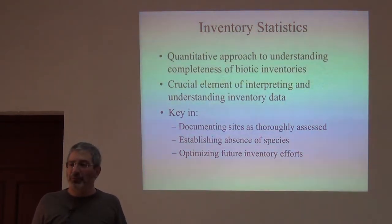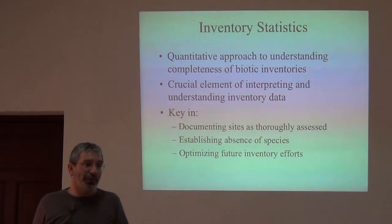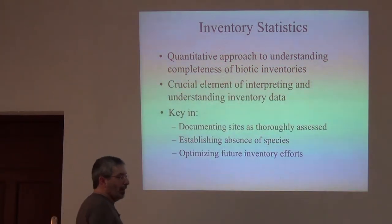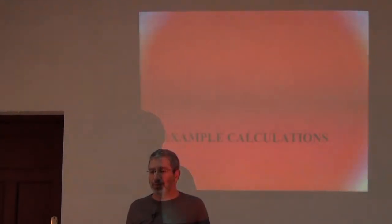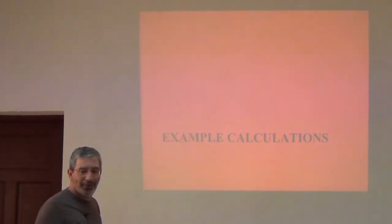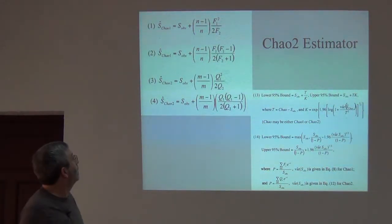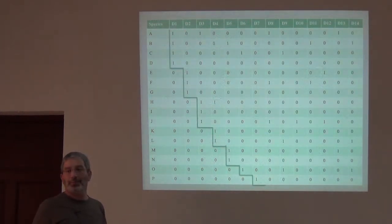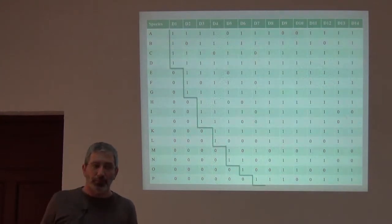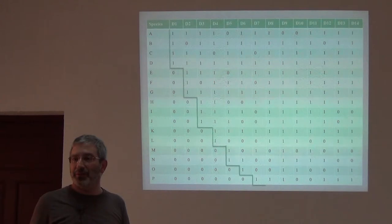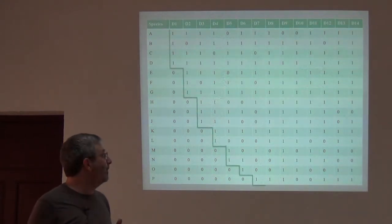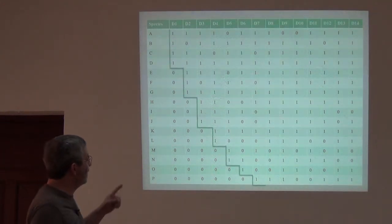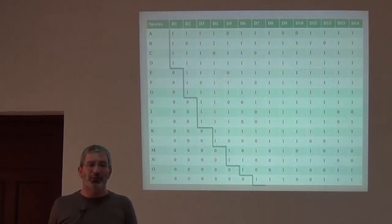The good news is we have some software to do that for us. The bad news is that I believe quite firmly in understanding things deeply before you use them. So that means you guys get to do this by hand. There's the equation — this is the equation we're looking for. Earlier in the morning I gave you two matrices, this one and this one, and what I want you to do is calculate inventory completeness statistics for each of these. I'm going to turn off the screen for one moment because I need to fix this matrix, just to make sure that your exercise works.